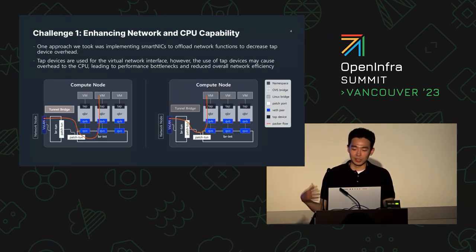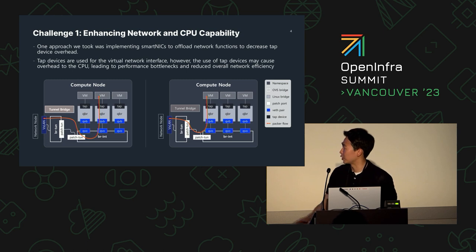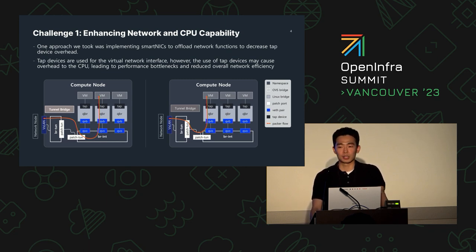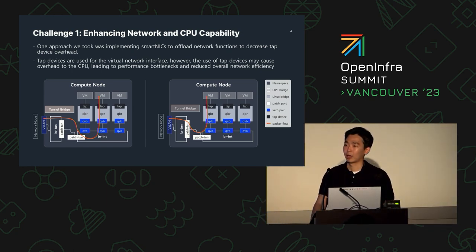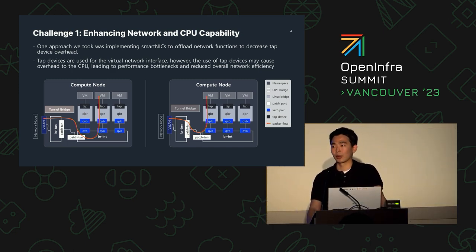The first challenge is enhancing network and CPU capability for AI cloud. There are many ways to tackle this issue, but we'll be talking specifically about how we integrated SmartNIC. In traditional network setups, there are tap devices in between. In environments requiring high workloads and data to process, these tap devices can cause overheads, creating bottlenecks in traffic and CPU performance. So there's a clear need to decrease tap device overheads.